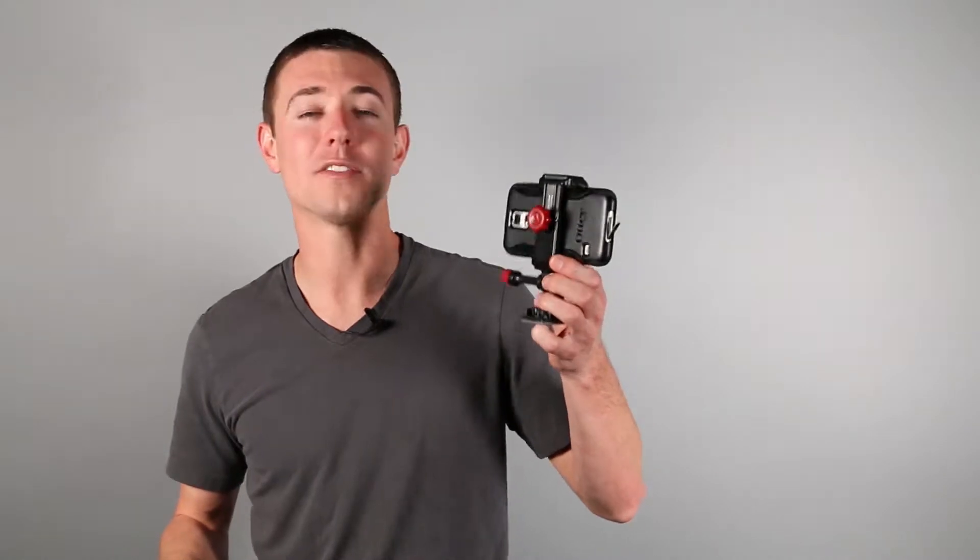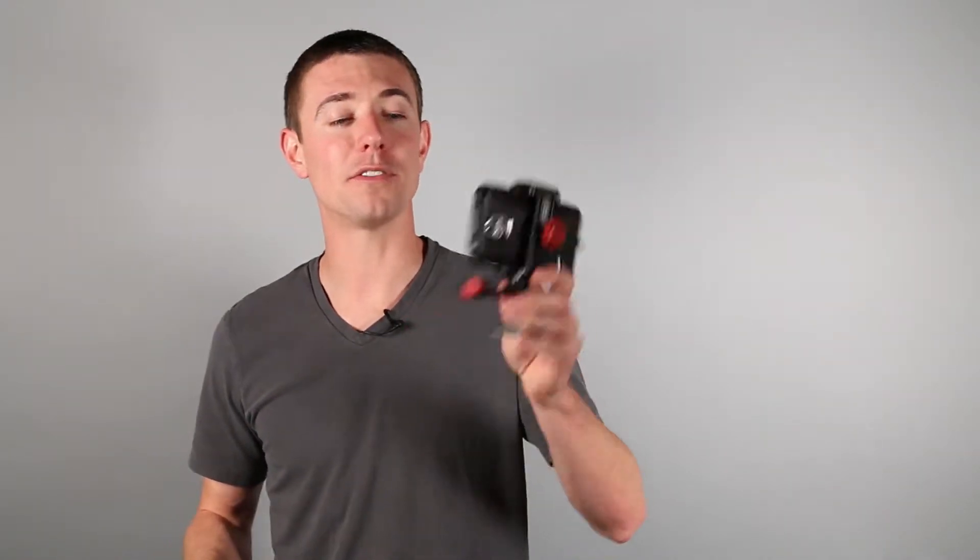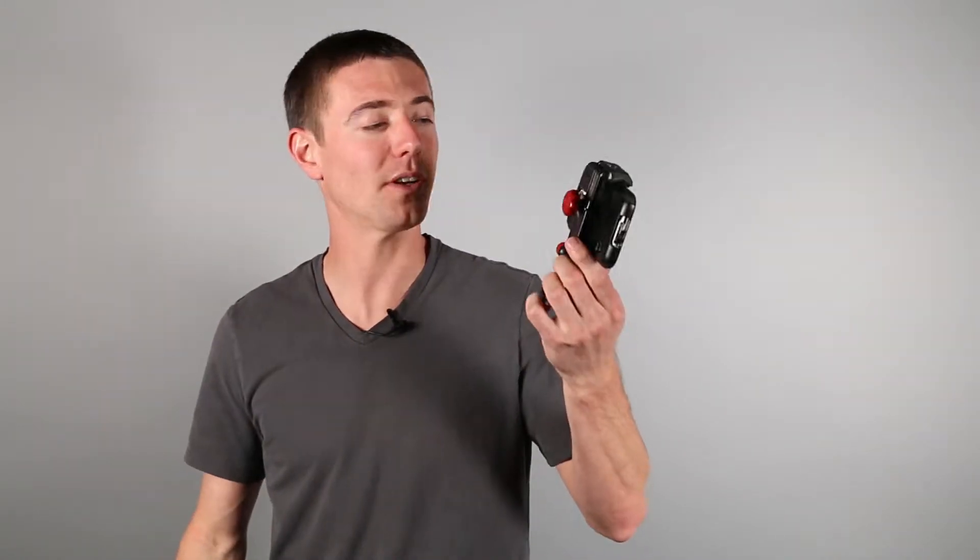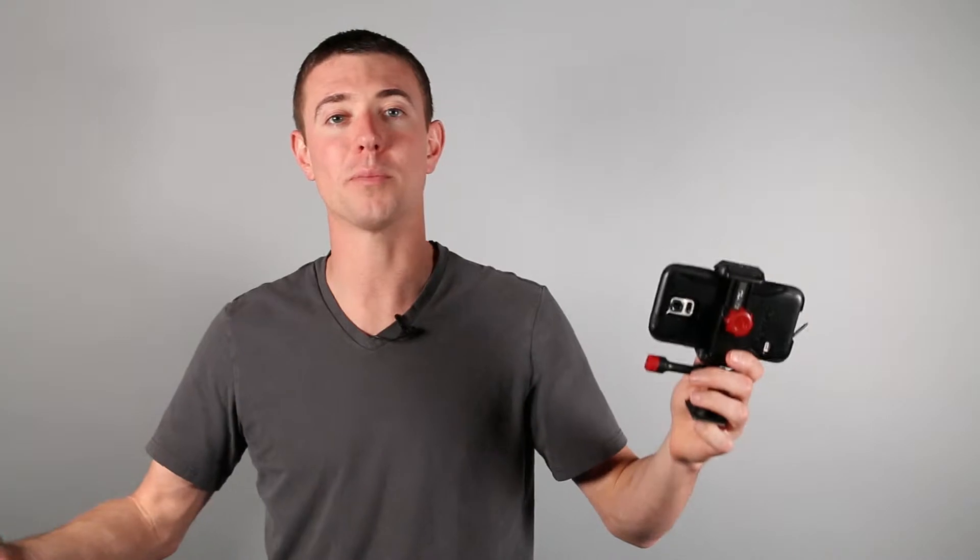What I want to talk to you about is our product, Velocity Clip. It's a universal cell phone smart mount that allows you to take your smartphone and film video with it. Basically, in short, think video with your phone like a GoPro, right?